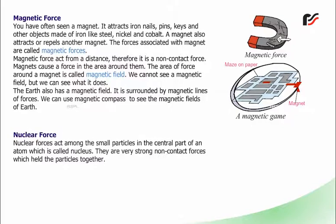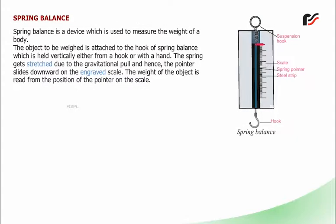Nuclear force: Nuclear forces act among the small particles in the central part of an atom, which is called the nucleus. They are very strong, non-contact forces which hold the particles together. Spring balance: A spring balance is a device used to measure the weight of a body. The object to be weighed is attached to the hook of the spring balance, which is held vertically either from a hook or with a hand. The spring gets stretched due to gravitational pull and the pointer slides downward on the engraved scale. The weight of the object is read from the position of the pointer on the scale.